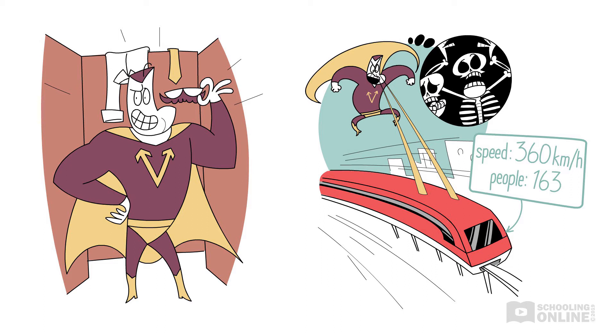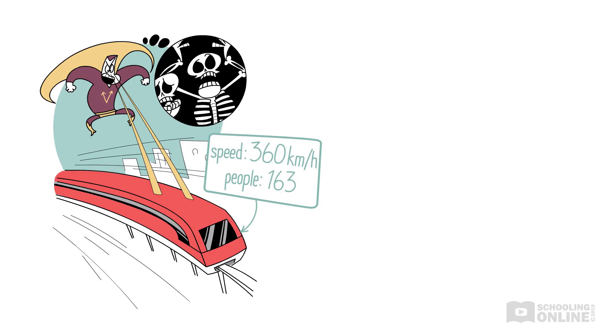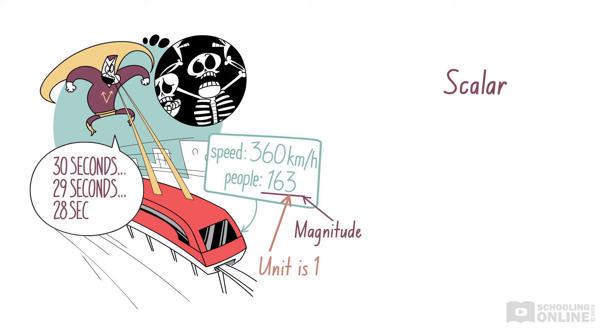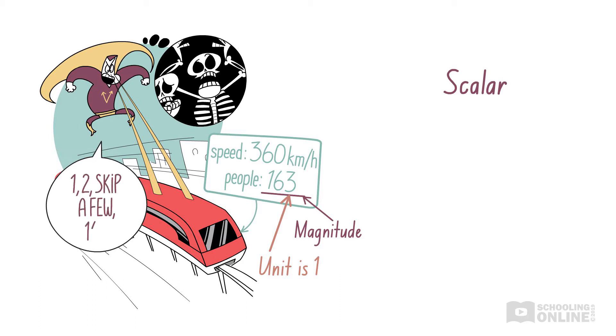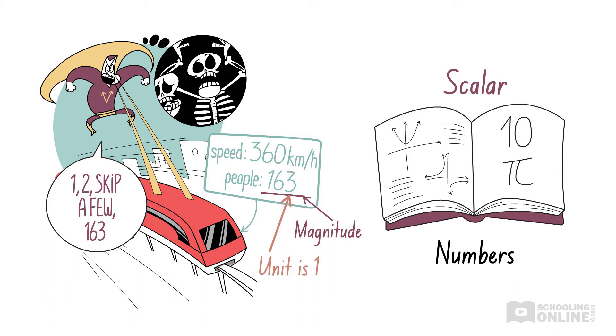Let's take another look at the number of passengers, 163. This is a scalar quantity because it includes both magnitude and units. The magnitude is 163, while the unit is 1. Now, it might sound weird when we say the unit is 1, but this makes sense when you think about it. If Vector Man was counting down the time until the train reaches the end of the track, he would count 30 seconds, 29 seconds, 28 seconds, meaning that the units are seconds. When he counted the people on the train, he counted 1, 2, 3, all the way up to 163. Since he went up by 1 each time, the unit is 1. As a general rule, numbers like 10 and pi are scalar quantities with units of 1.